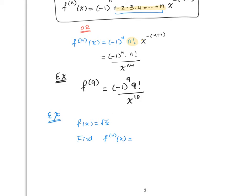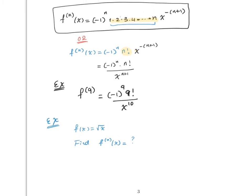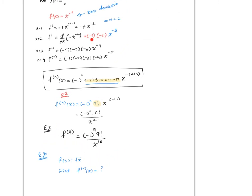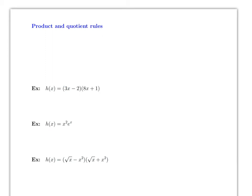Remember the key is to not simplify, because if you simplify 1 times 2 is 2, then 6, then 24, you will not see the pattern. It's a lot better to leave it in product form. Give it a try — it's not that hard but not that easy either. Okay, so let's go now to section 3.2.